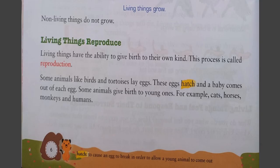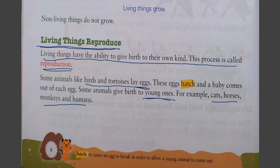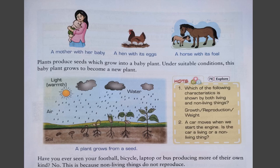Next property: living things reproduce. Living things have the ability to give birth to their own kind; this process is called reproduction. Some animals like birds and tortoises lay eggs — these eggs hatch and a baby comes out of each egg. Some animals give birth to young ones, for example cats, horses, monkeys, and humans. Non-living things do not reproduce. We can see a mother with her baby, a hen with its eggs, and a horse with its foal.